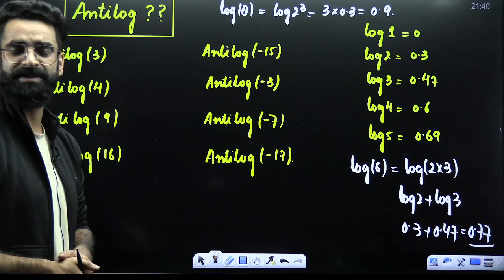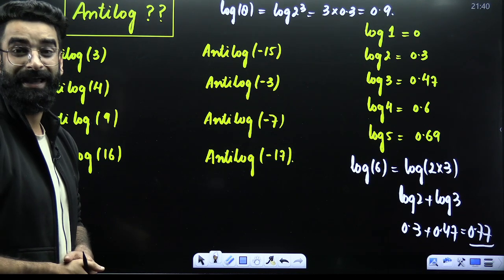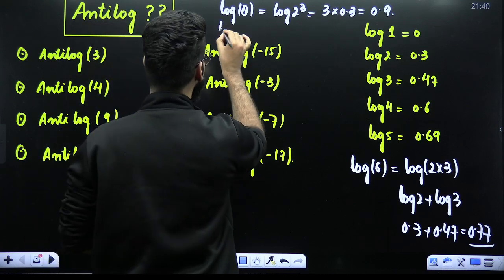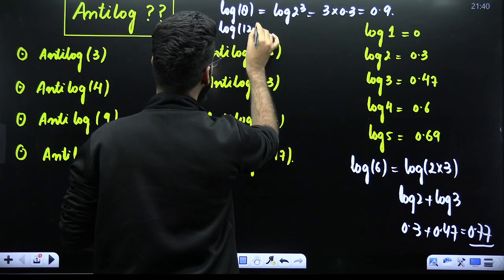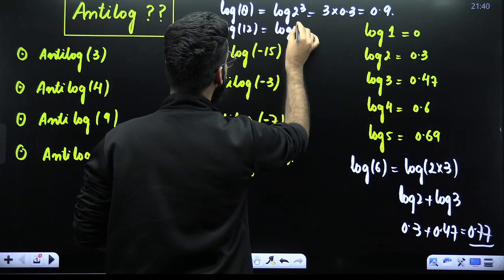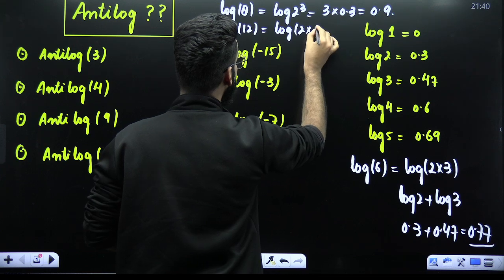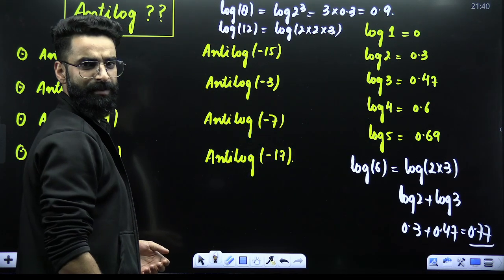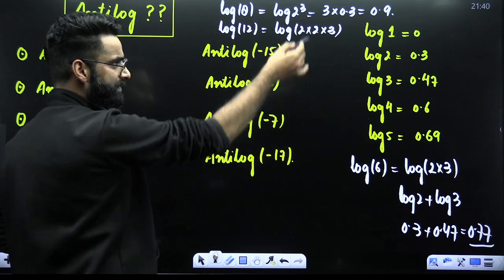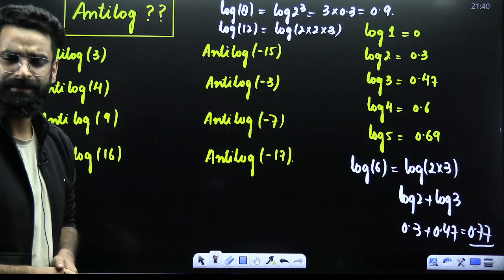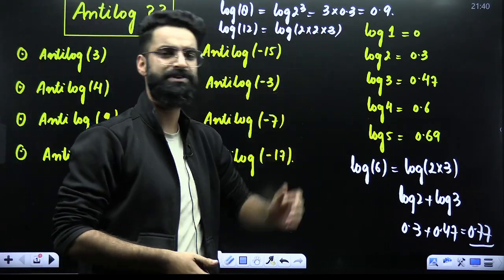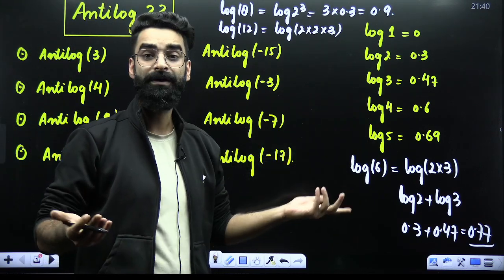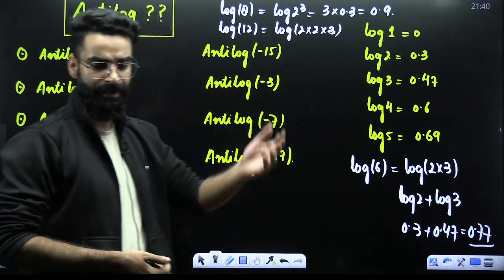For example, log of 12 — I need not remember its value. I can split 12 into different parts: 2 × 2 × 3. Accordingly you can split it and get your result. These are the few logarithmic values you need to remember. One more: log 10 to the base 10 is 1.